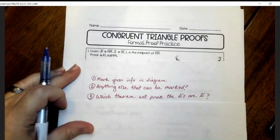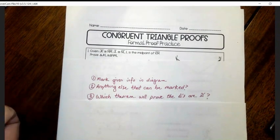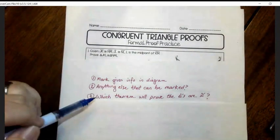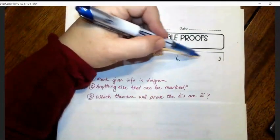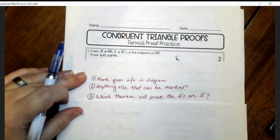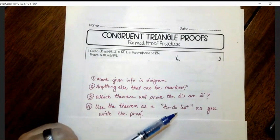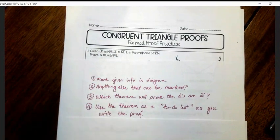Number three, you've got to figure out which one of the theorems can you use to prove that the triangles are congruent. And then step four, you want to write that theorem somewhere in your picture away from where your proof is going to be. So I would write it like at the top of my page over here. You're going to use that theorem as a to-do list as you write the proof. And that's going to make sense as I do a couple examples here.